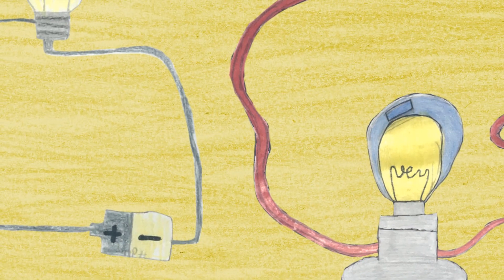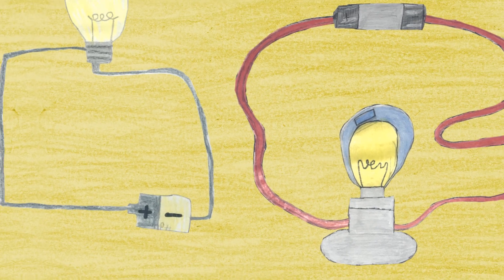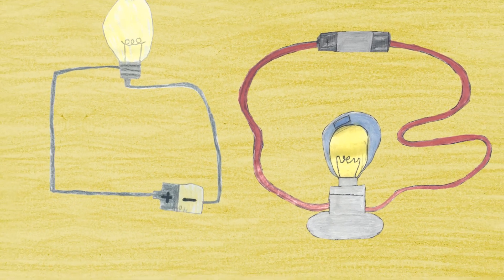The electricity flows freely around the circuit. To stop that, we need to break the circuit.